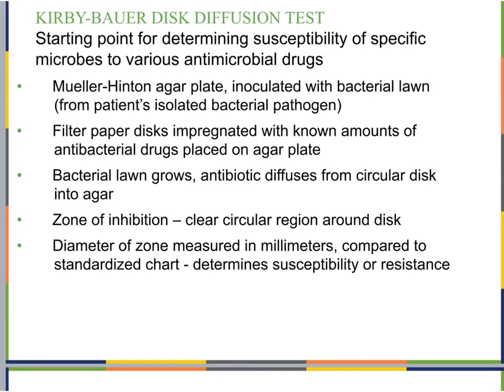Our starting point for determining susceptibility of a specific microbe to a particular antimicrobial is typically the Kirby-Bauer disc diffusion test, because it is a very simple test that works quickly and gives us a starting point. We use Mueller-Hinton agar because it is not as thick as typical LB agar or other standard agars, so it allows things to diffuse through it more easily — which is important when placing an antimicrobial on agar and wanting it to diffuse and reach the bacteria.